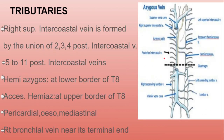The tributaries of the azygous vein on the right side are 11 in total, known as the posterior intercostal veins. The second, third, and fourth veins merge to form the right superior intercostal vein, while veins 5 to 11 remain as individual posterior intercostal veins. On the left side, the two main tributaries are the accessory hemizygous vein (at the upper border of T8) and the hemizygous vein (at the lower border of T8). Additional tributaries include the pericardial, esophageal, mediastinal, and right bronchial veins near its terminal.